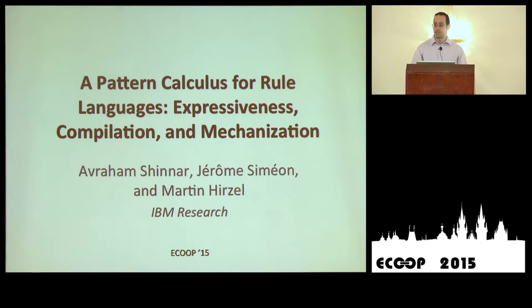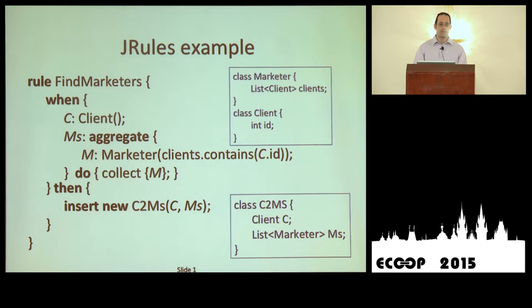To start off, I'm going to present some background which actually motivated this. IBM has a language called JRules, which is a production rule language. Other similar languages include an open-source rules engine and the more academic OPS5, which was one of the early papers on this.